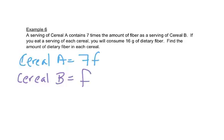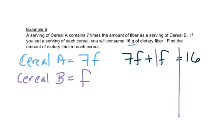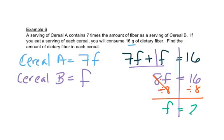Now it says if you eat a serving of each of them total, you'll get 16 grams. So that means if we take 7F plus F, we should get 16. We'll draw our line down here. Remember, this is really 1F, so 7F plus 1F is 8F equals 16. We'll do the opposite operation. This is multiplication, so we'll divide by 8 and divide by 8, and we're left with F equals 2.